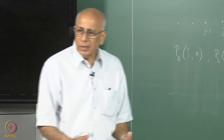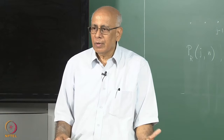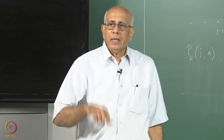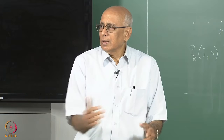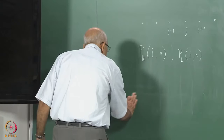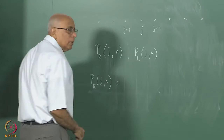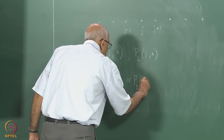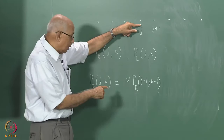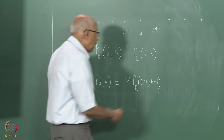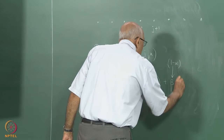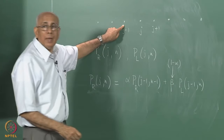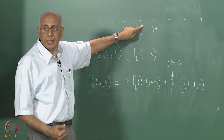There is a certain probability with which the particle reverses direction. Instead of a fair coin, we use a biased coin: with probability α it continues in the same direction as the previous step, and with probability β = 1 − α it reverses direction. The rate equations are: P_R(j,n) = α·P_R(j−1, n−1) + β·P_L(j−1, n−1), meaning the right-moving state at j comes either from continuing right or from reversing from a left-moving state at j−1.